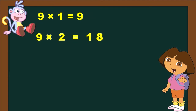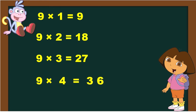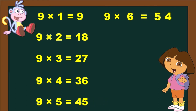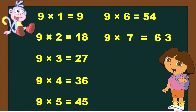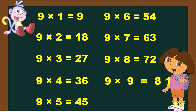9 1s are 9. 9 2s are 18. 9 3s are 27. 9 4s are 36. 9 5s are 45. 9 6s are 54. 9 7s are 63. 9 8s are 72. 9 9s are 81. 9 10s are 90.